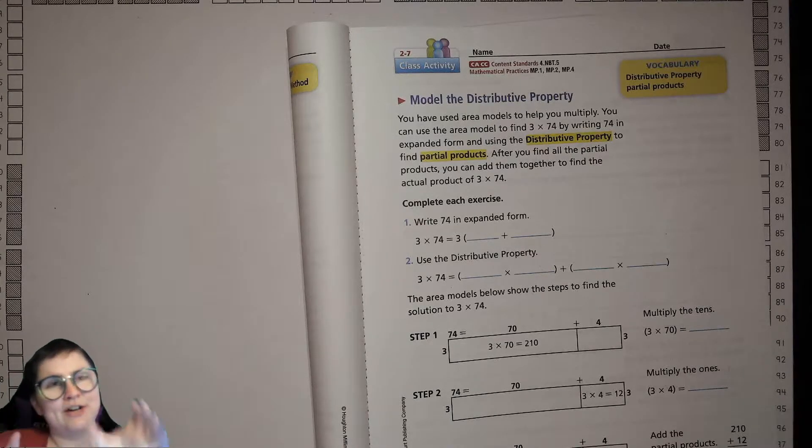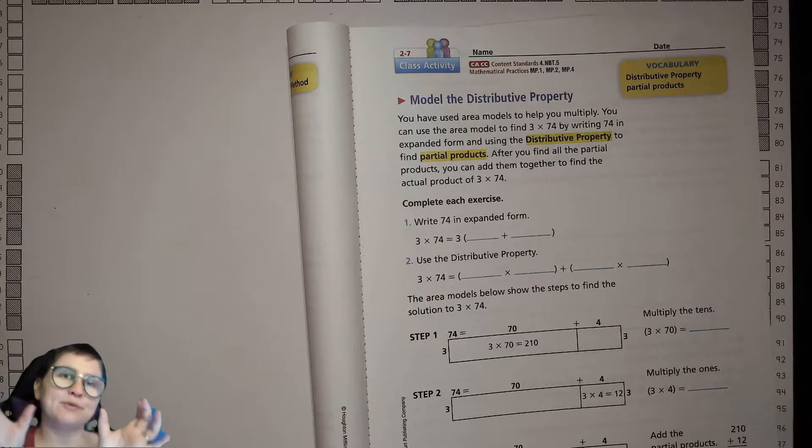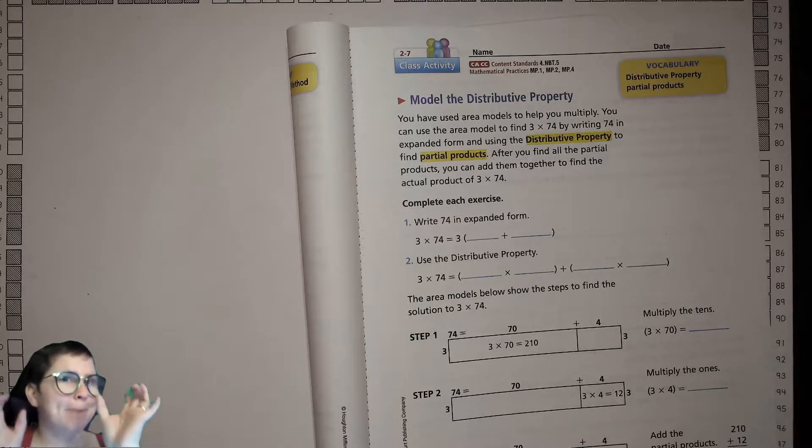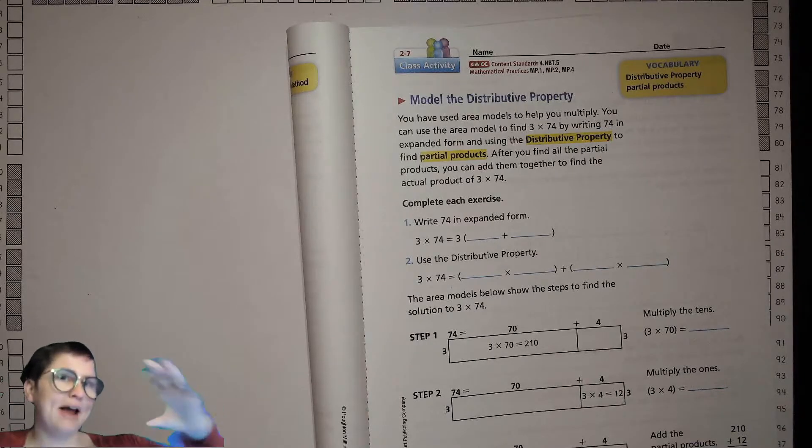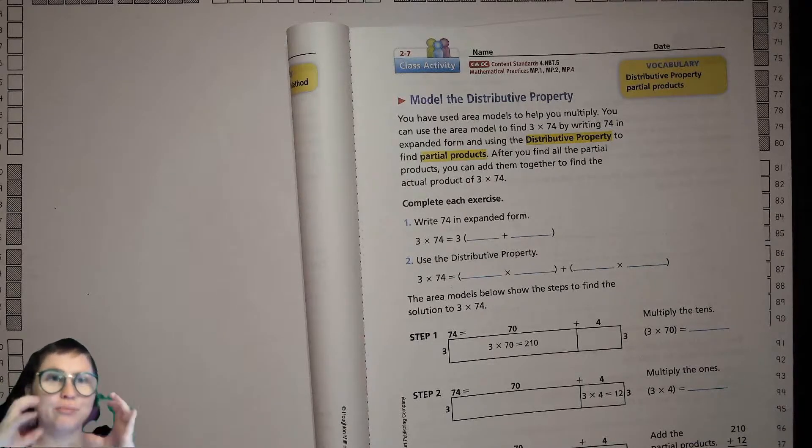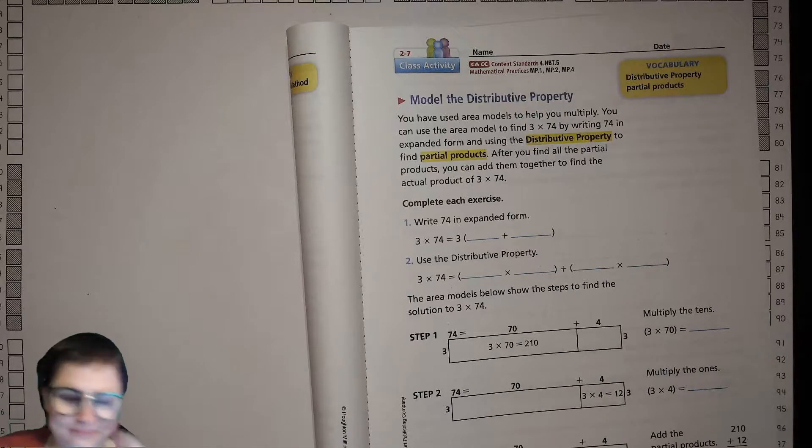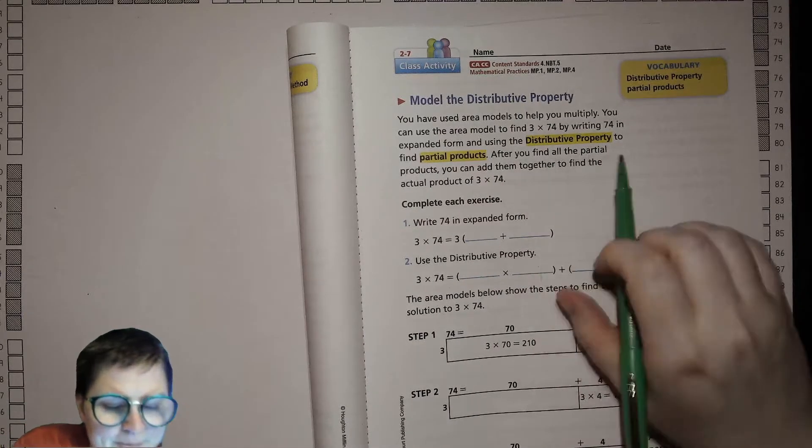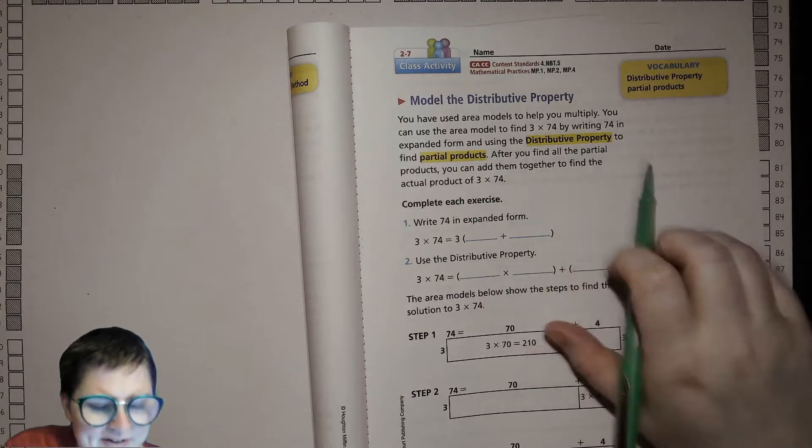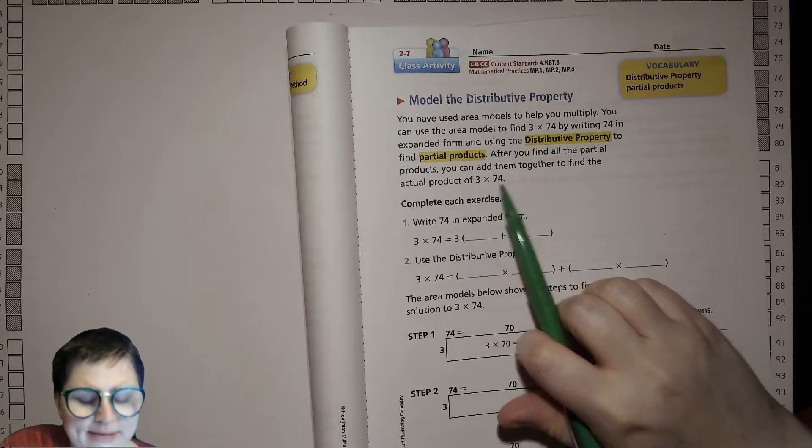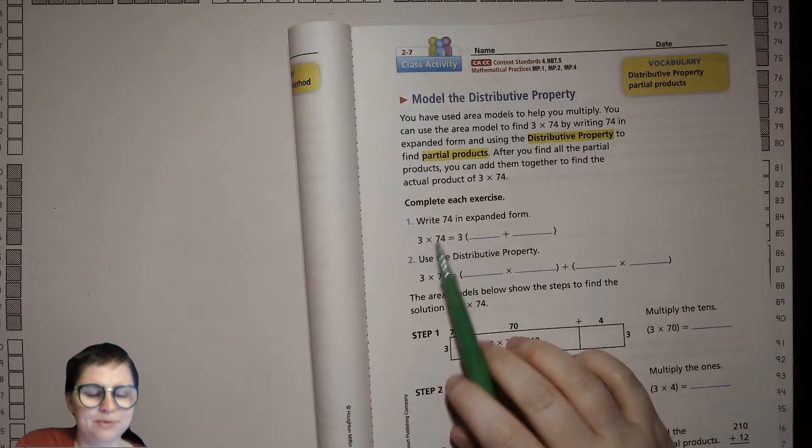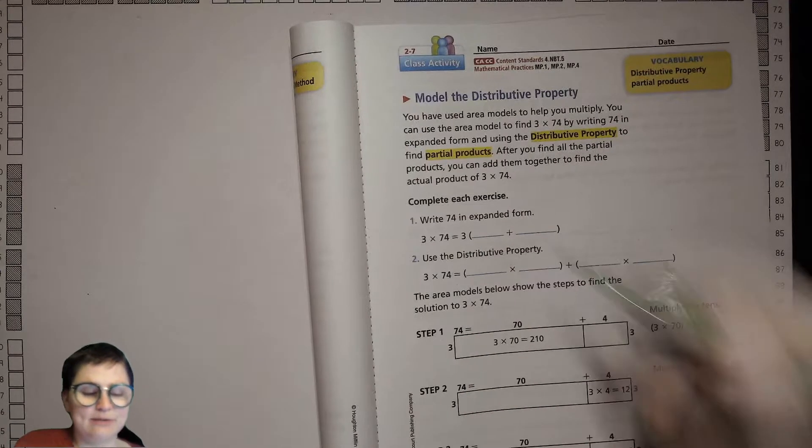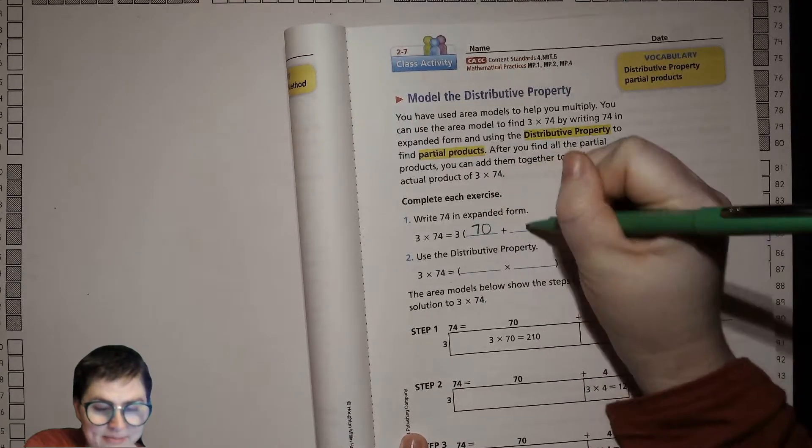By breaking 74 into 70 and 4 and then distributing the 3 to the 70 and to the 4, you'll find 3 times 70 and 3 times 4, and those will each be partial products. Then after you find all the partial products you can add them together to find the actual product of 3 times 74.